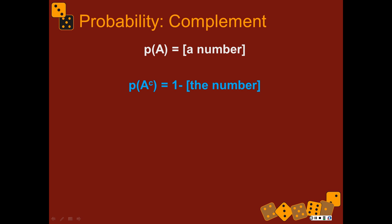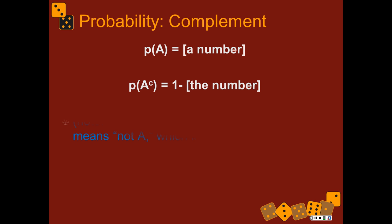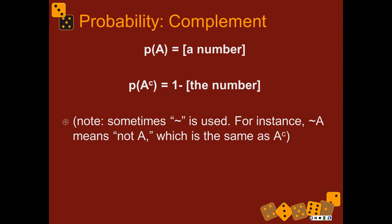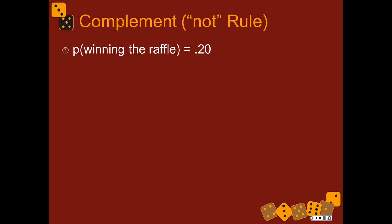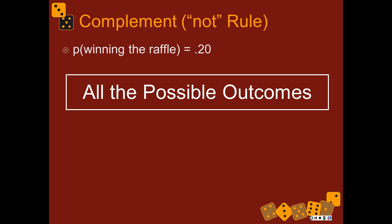So there's some weird notation, but you don't have to use all of it. Just remember: the probability of something happening is something like 0.3, then the complement is one minus that — so one minus 0.3 is 0.7. Sometimes we use tilde to mean 'not.' So 'not A' is the same as A-complement. If the probability of winning the raffle is 0.20, then the complement is one minus 0.20, which is 0.8.